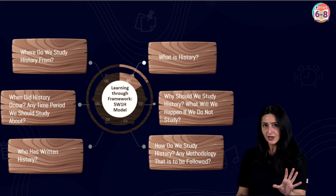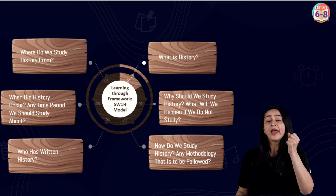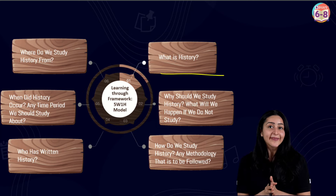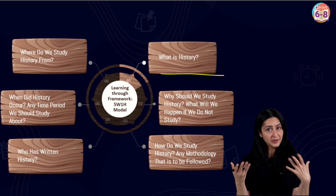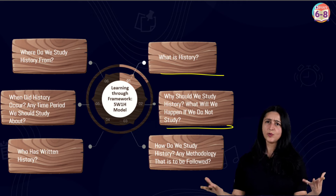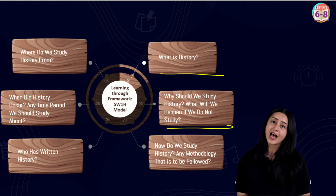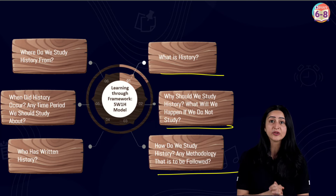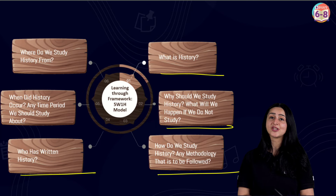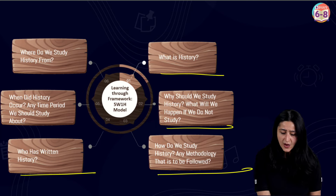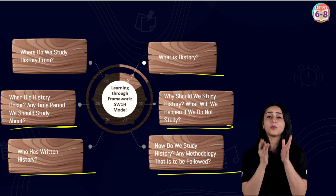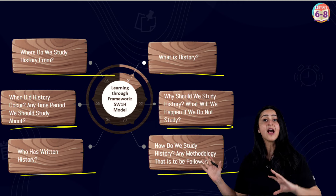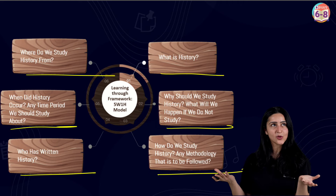Let me apply the 5W1H framework to our chapter. The first question — What? — we ask: What is history? The second — Why? — we ask: Why should we study history and what will happen if we don't? The third — How? — we ask: How do we study history and is there any methodology to follow? The fourth — Who? — we ask: Who has written history? The fifth — When? — we ask: When did history occur and what time period should we focus on? And finally — Where? — where do we study history from? There are five W's and one H, which is why it's called the 5W1H framework.